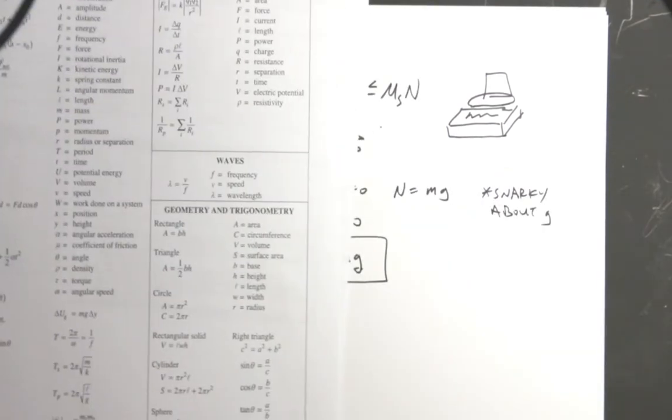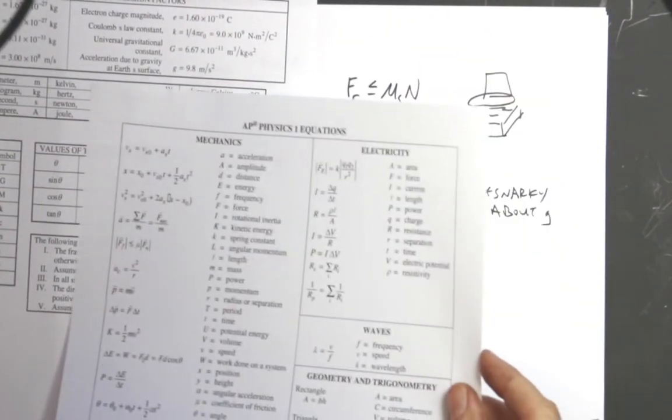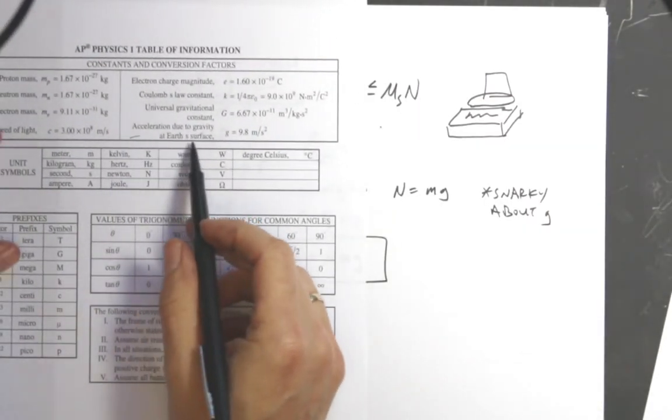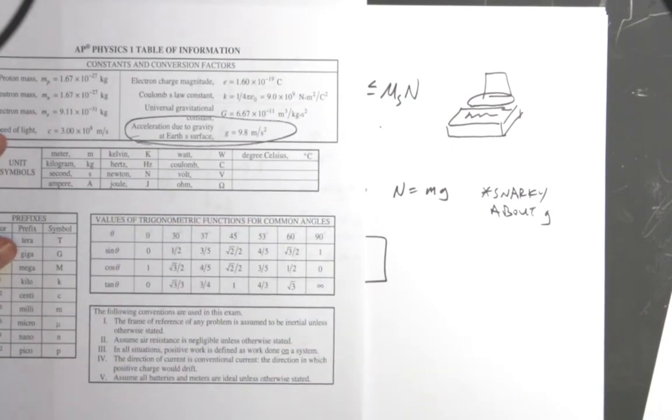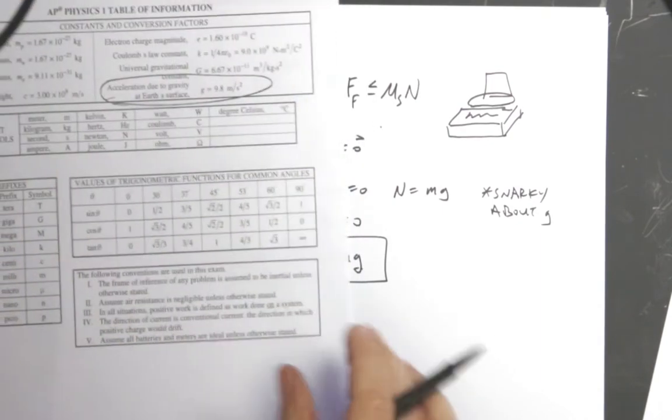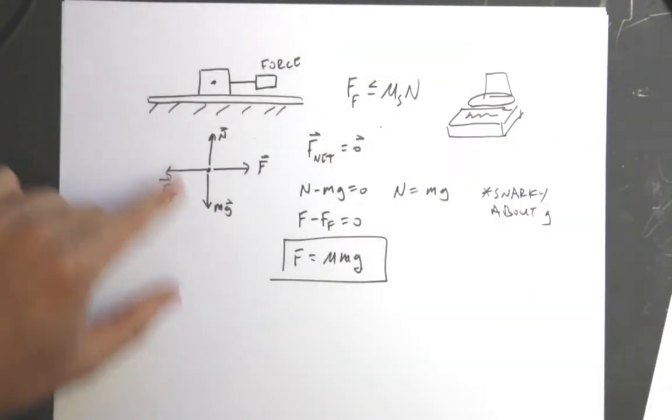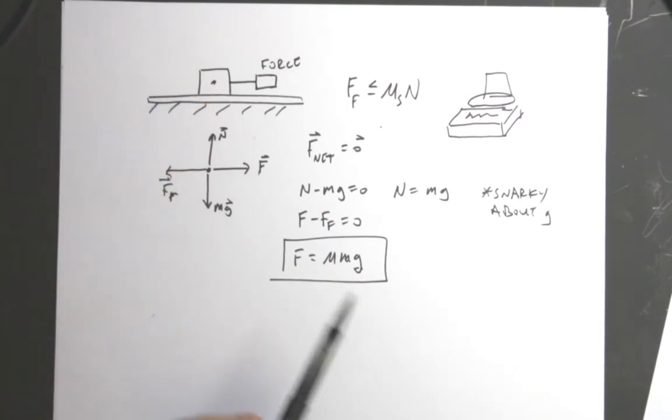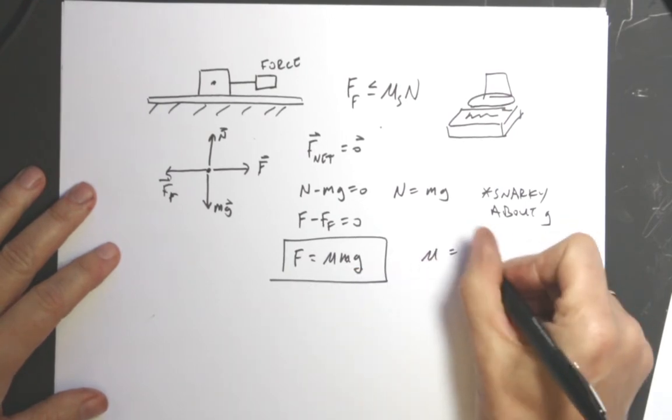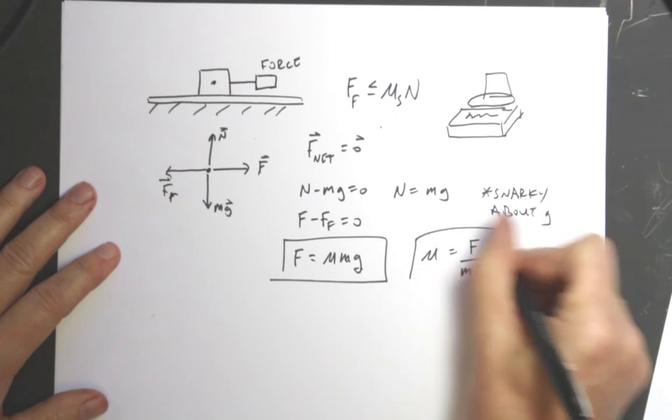I would make a snarky comment about g. It says acceleration due to gravity at the surface of the earth. That's a pet peeve of mine. I would say the gravitational field, the magnitude of the gravitational field on the surface of the earth, because this one's not accelerating. I don't like calling that acceleration due to gravity. That would give me the coefficient: mu equals F over mg, and you could calculate it that way.